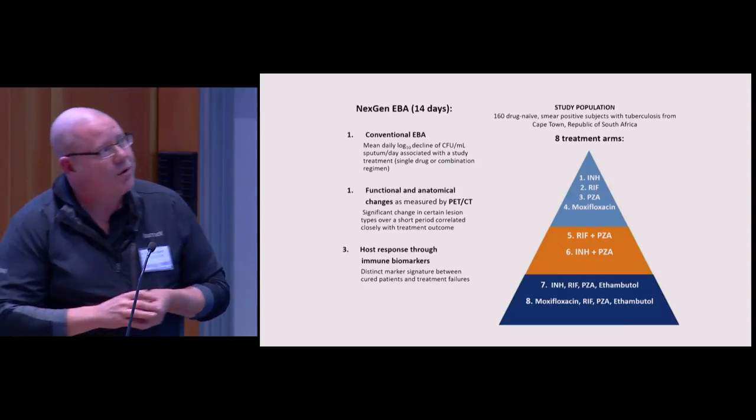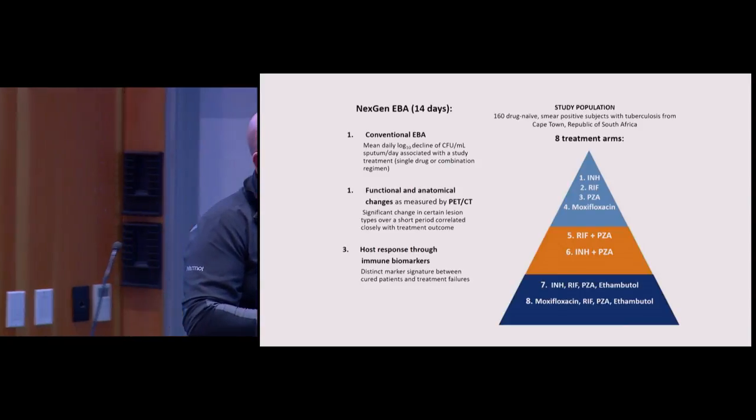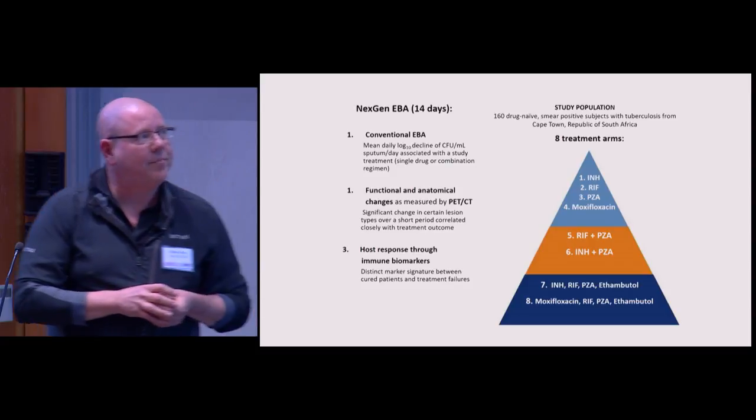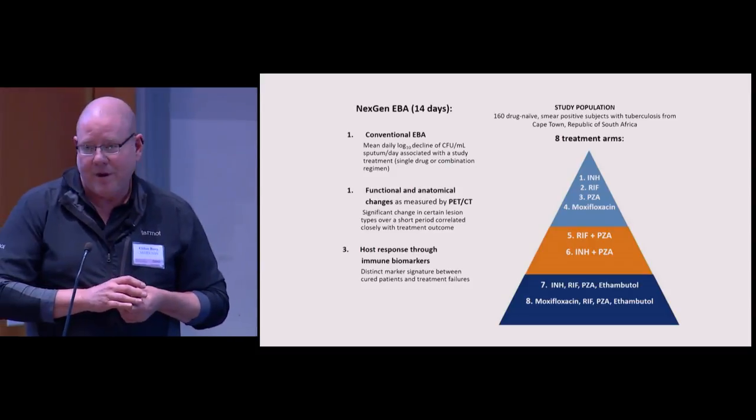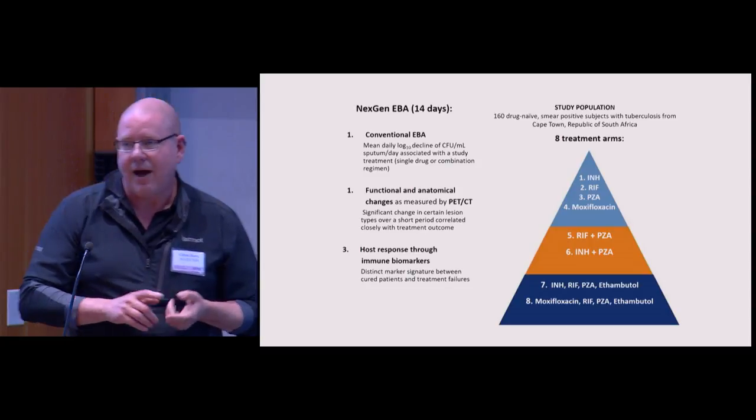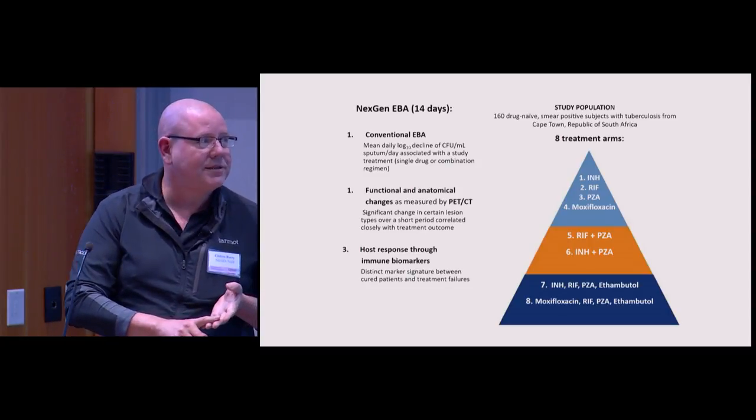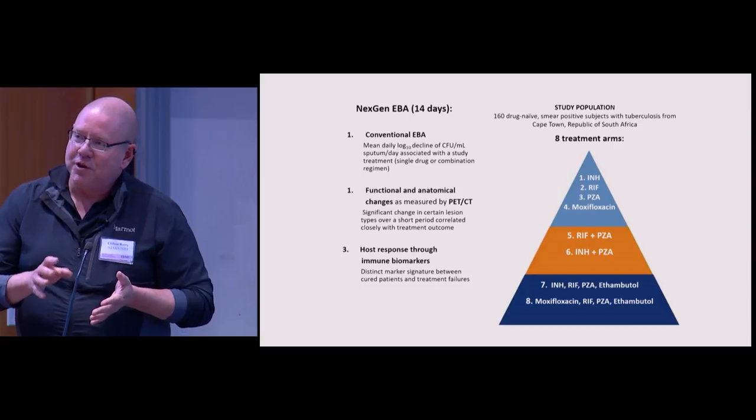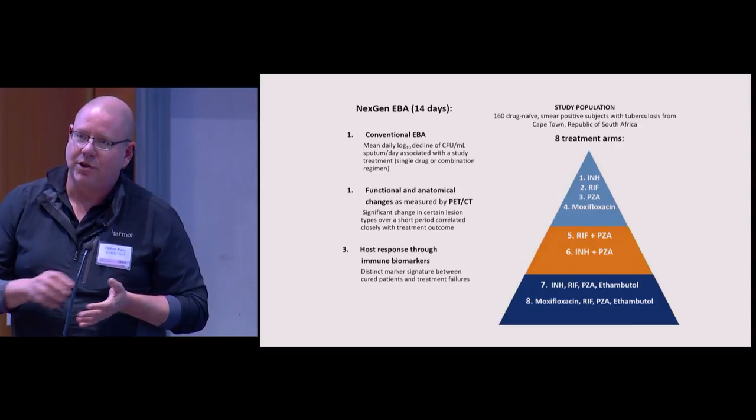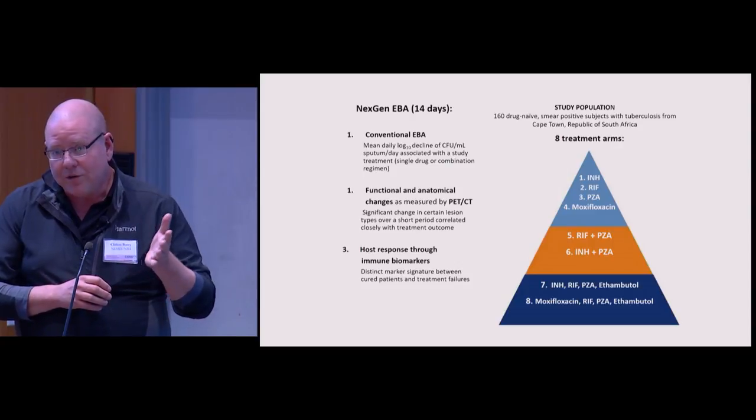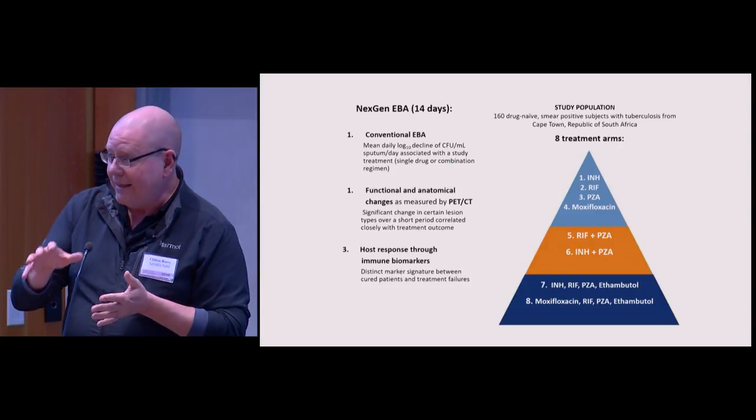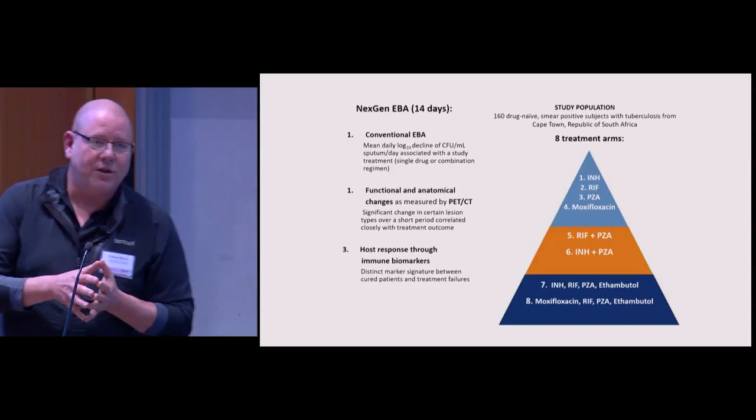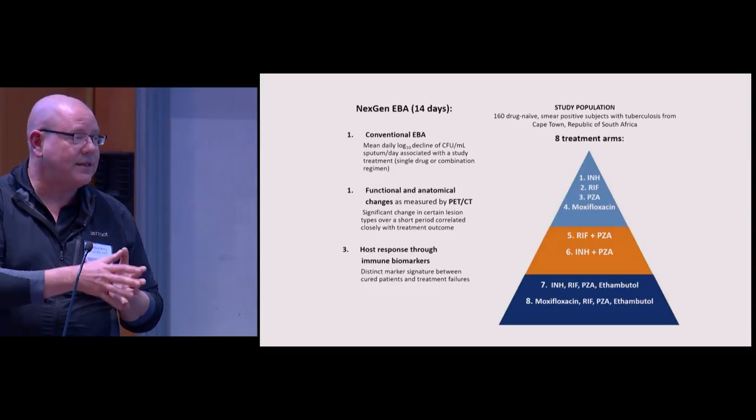We decided to enroll 160 drug-naive, smear-positive patients with TB—this is in Cape Town with Andreas Diacon, who's the guru of EBA studies—into eight different treatment arms. The treatment arms are very bog-standard things: INH, RIF, PZA, moxifloxacin, RIF and PZA, INH and PZA, the standard four-drug treatment, and the four-drug regimen used in the REMOX trial that failed in phase three. What we wanted to do was randomly assign them to those, look on a lesion-by-lesion basis the way I've been showing you in the monkeys, see what the impact of each drug was, and see if we couldn't rationalize the results in terms of impact on specific types of lesions.